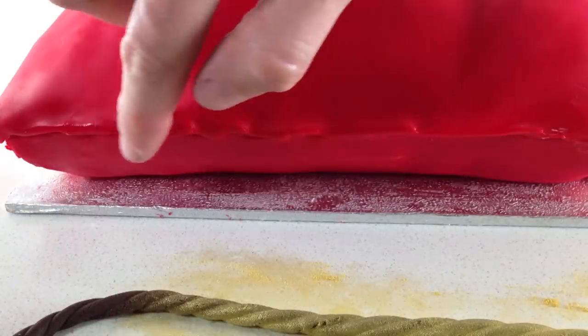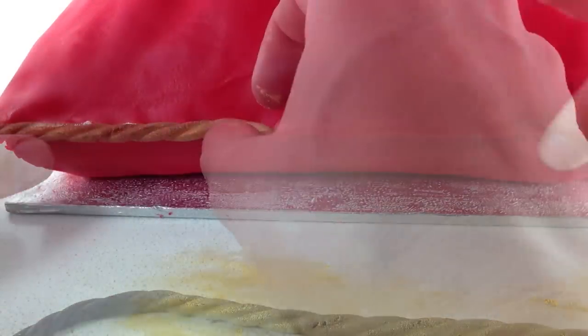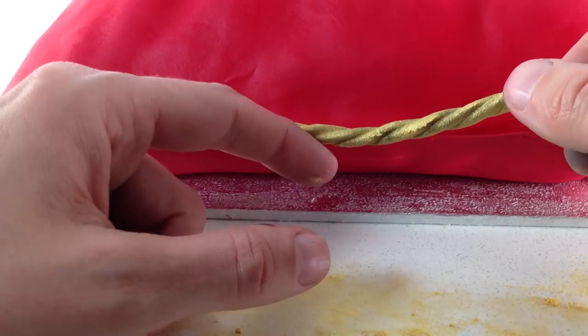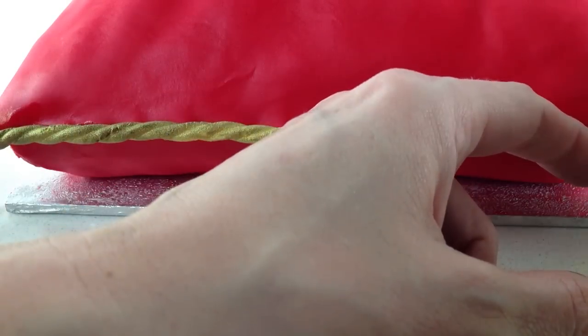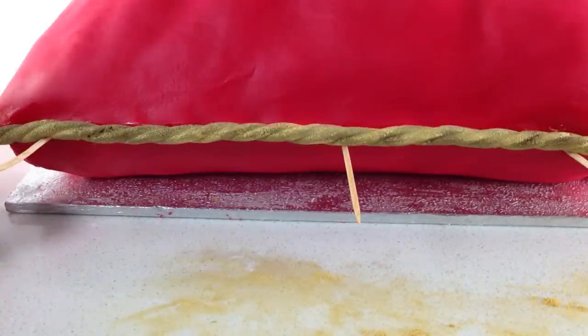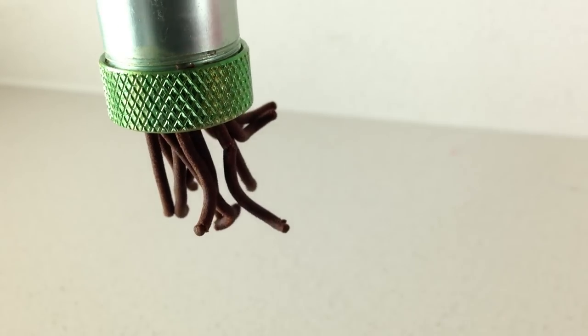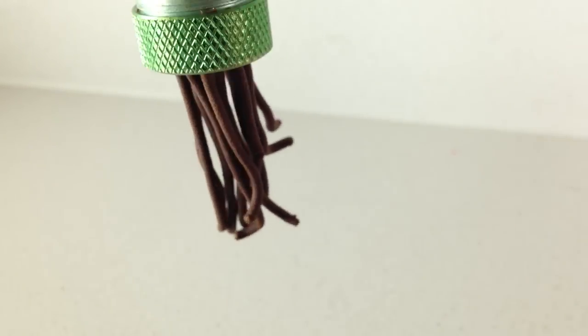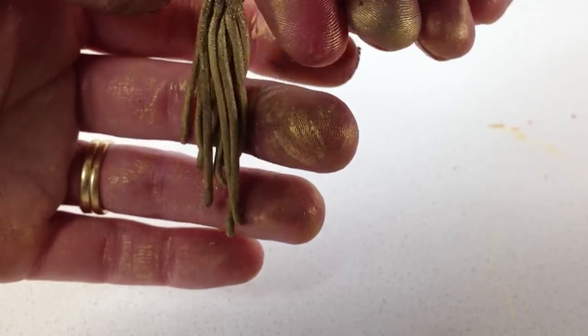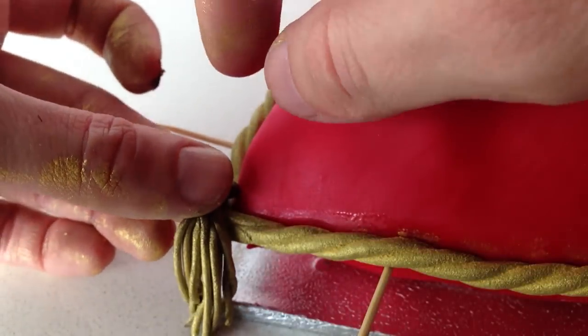Add some water along the edge of your pillow and put the cord on, using some toothpicks to hold it into place while that water fuses it to the cake. Then using the fondant extruder again fitted with the small circle tip, squeeze out some thin spaghetti-looking pieces of fondant, dust them with gold, twist the top, and place them onto the corners of the cake.